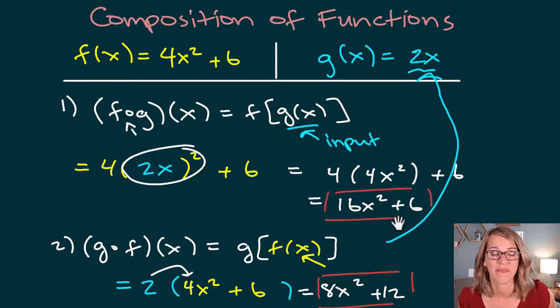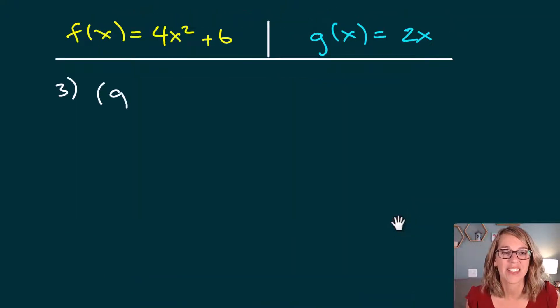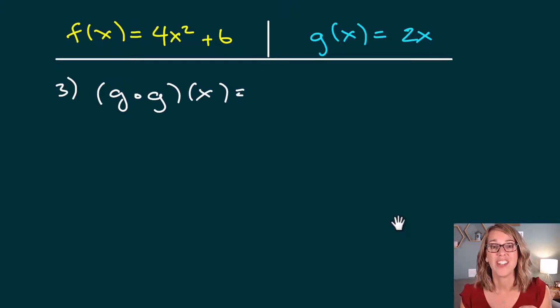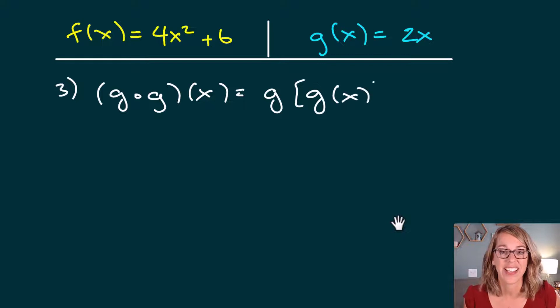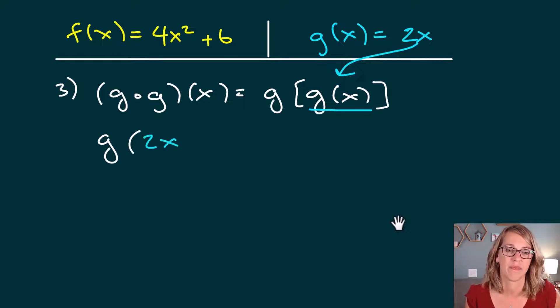Let's keep going. Continuing with these two functions, I want to do g composed with g of x. So I really want to apply g twice. g multiplies stuff by 2. So I'm going to do g of g of x. I can even start to do some substitution here. I know that this input g(x) can get replaced with a 2x. So I can rewrite this as g of 2x.